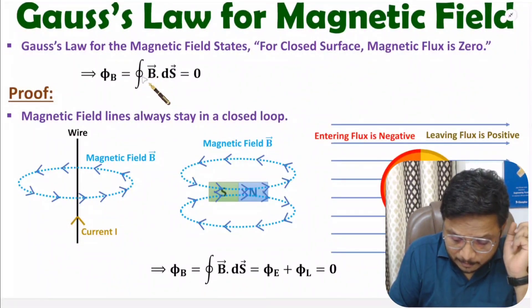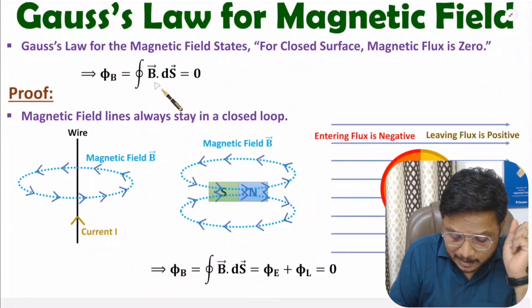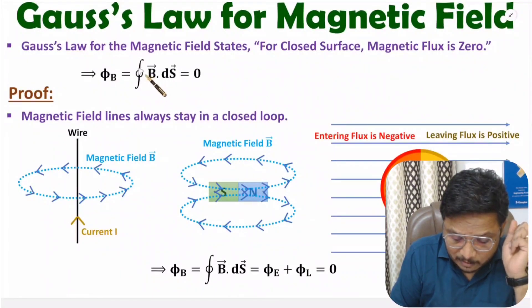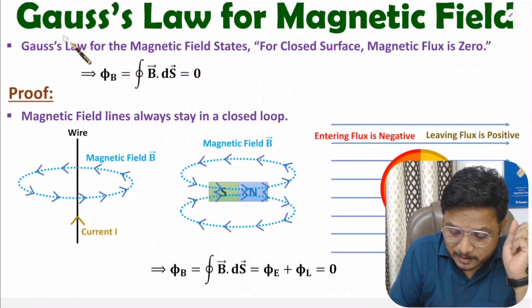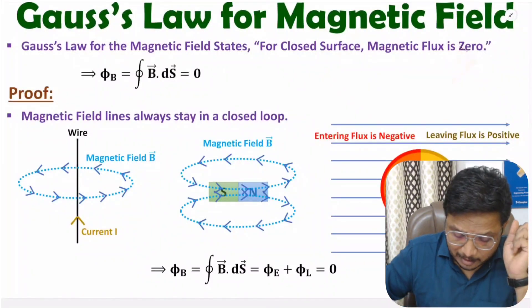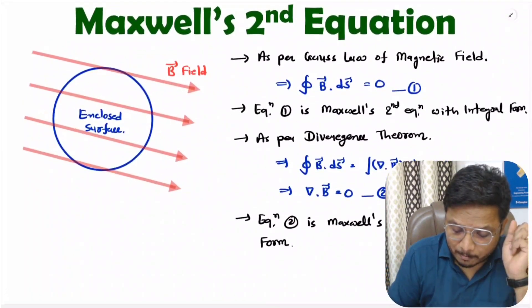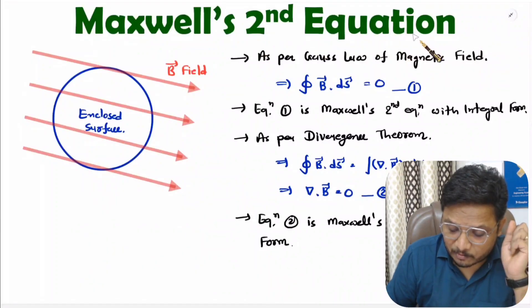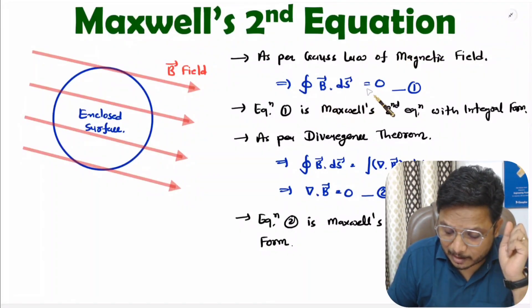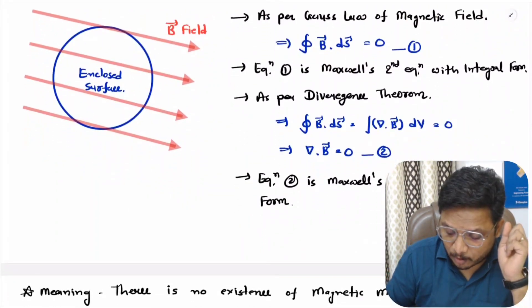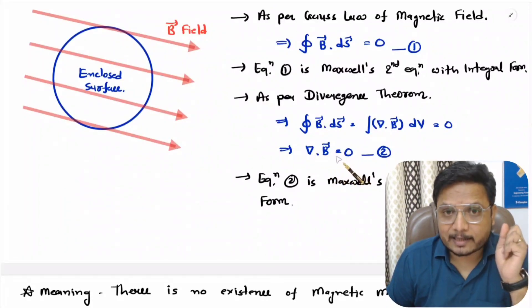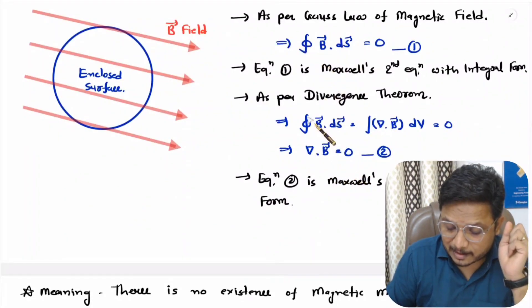Gauss's law for magnetic field states that for a closed surface, magnetic flux is zero. Magnetic flux is the integration of magnetic field with respect to surface. Based on that, we have Maxwell's second equation — the integral form states flux is zero, and in point form, divergence of magnetic field equals zero.